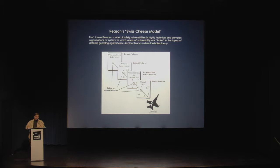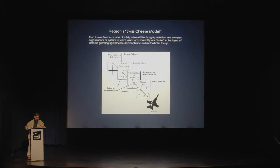One of those lessons is that the root cause is usually not just one thing. Professor James Reason has developed a model of safety vulnerabilities in highly technical and complex organizations or systems, in which areas of vulnerability are holes in the layers of defense guarding against error. He calls this the Swiss cheese model. The holes are constantly changing size, shape, and location as an organization or project evolves over time. Changing management decisions, procedures, regulations, and technology introduce new variables. Accidents occur when the holes line up.